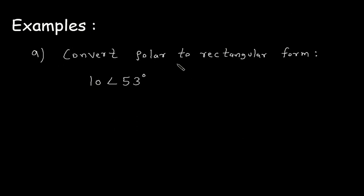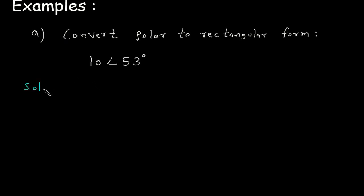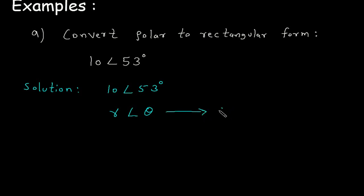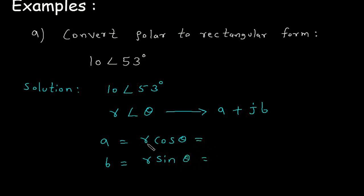Example: convert polar to rectangular form. 10 at an angle of 53 degrees is given in polar form — that is, in the form R at an angle of theta. We convert it into its equivalent rectangular form A plus jB. A equals R cos theta, so A equals 10 cos 53. B equals R sin theta, so B equals 10 sin 53.